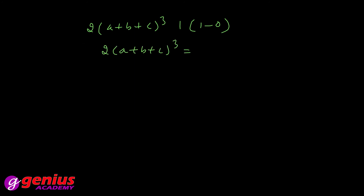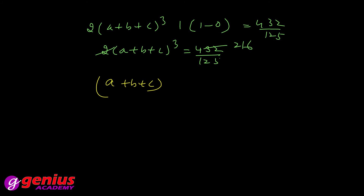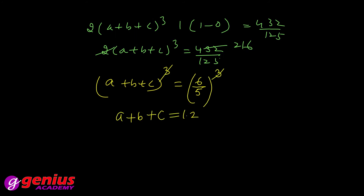2(a+b+c)³ = 432/125. Cancel karne par (a+b+c)³ = 216/125. 216 = 6³ aur 125 = 5³, toh a + b + c = 6/5 = 1.2. Yeh aapka final answer hai.